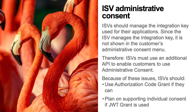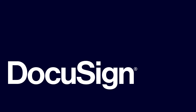DocuSign highly recommends that ISVs should manage the integration key for their applications. Since the ISV controls the integration key, it is not shown on the customer's administrative consent list of keys. Therefore, ISVs must use an additional API to enable their customers to use administrative consent. And since most DocuSign customers do not have access to the organization administration tool, DocuSign currently recommends that ISVs should use the Authorization Code Grant flow in preference to the JWT grant if they can. If JWT grant is used, ISVs should plan on using individual consent. Thank you for developing with DocuSign. Remember to check the show notes for the documentation links.